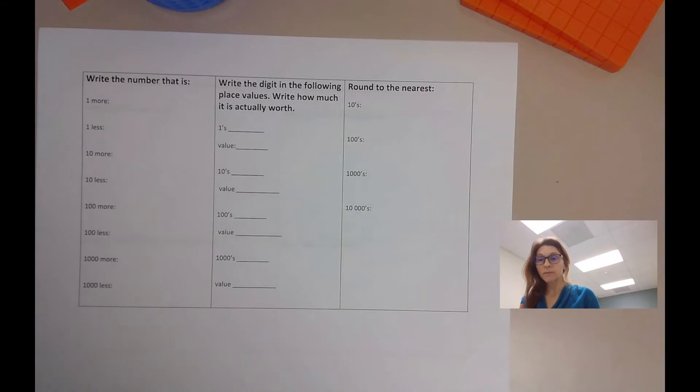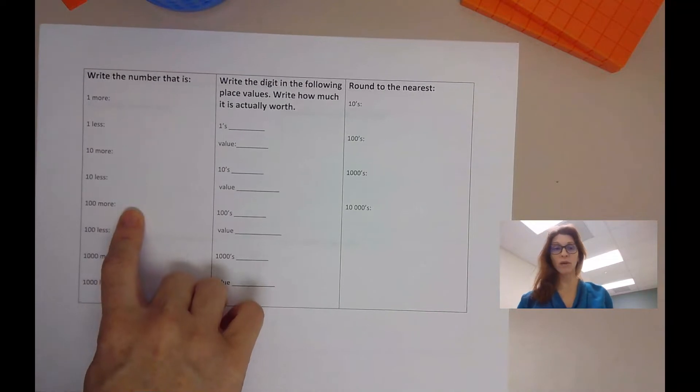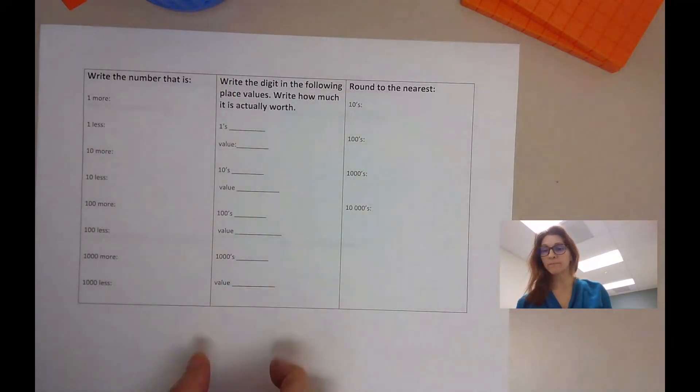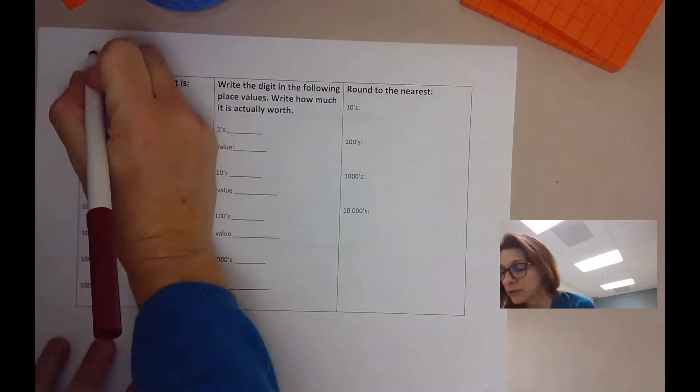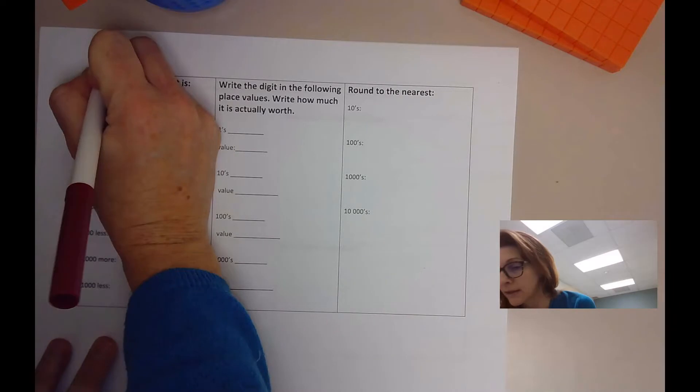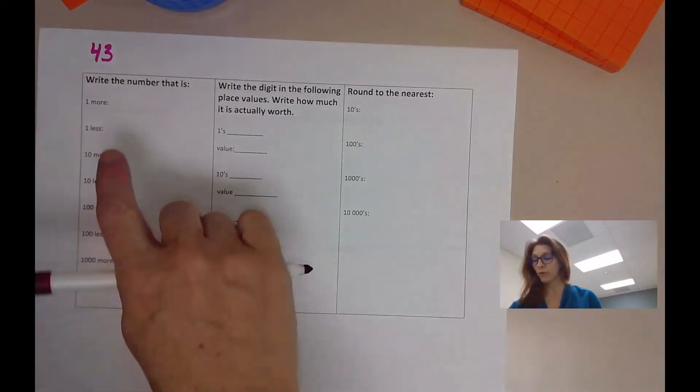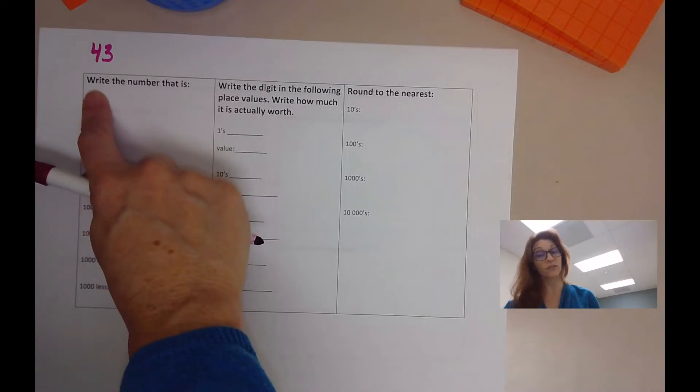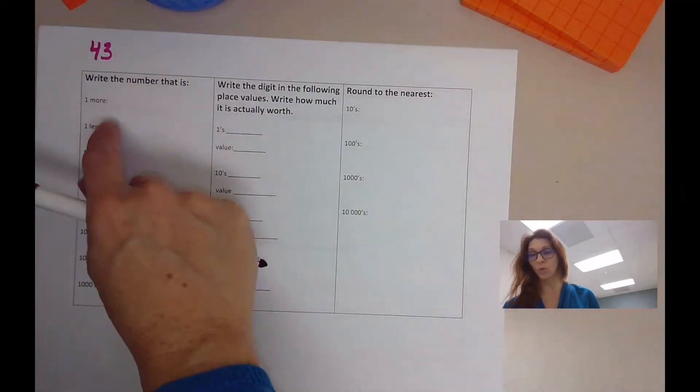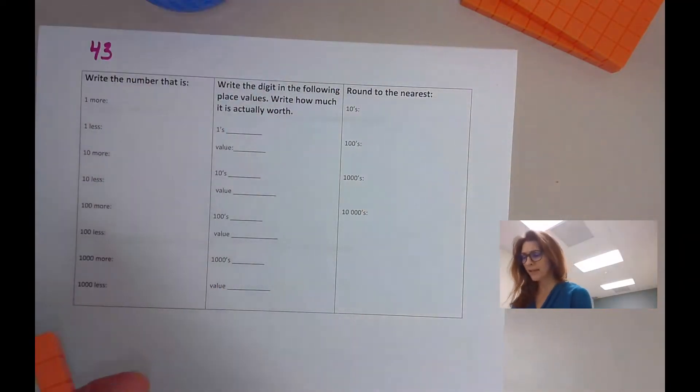Okay guys, we are going to be going over our weekly number sheet. This is for page two of it. So if you flip to page two, we have three columns. As a reminder, we were working with the number 43 as an example. I'll just put it up here as a reminder. We're writing the number 43.